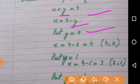Put y is equal to 0, so x is equal to 4 minus 0, so x will be 4. Our values will be 4 comma 0.